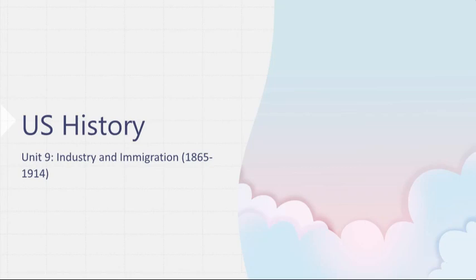Hi and welcome to Unit 9 of U.S. History, titled Industry and Immigration. This is a period that takes place between 1865 and 1914.